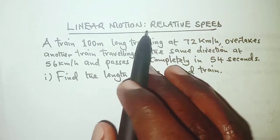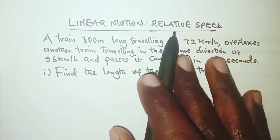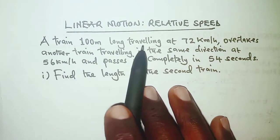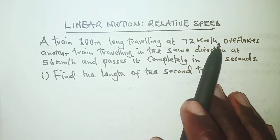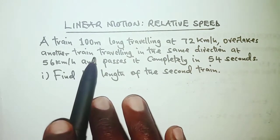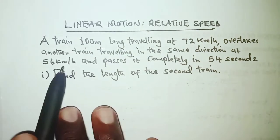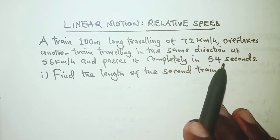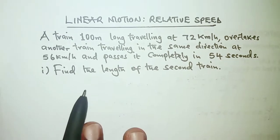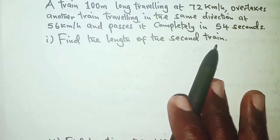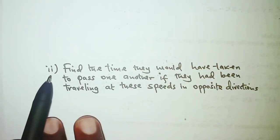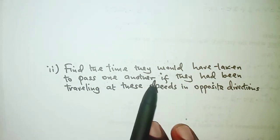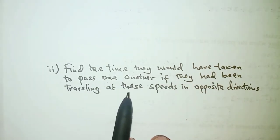The question today is on linear motion and we're going to look at relative speed. A train 100 meters long traveling at 72 kilometers per hour overtakes another train traveling in the same direction at 56 kilometers per hour and passes it completely in 54 seconds. Part one: find the length of the second train. Part two: find the time they would have taken to pass one another if they had been traveling at these speeds in opposite directions.